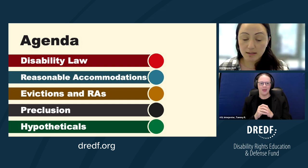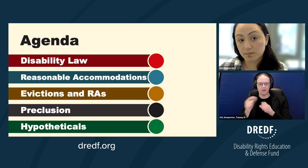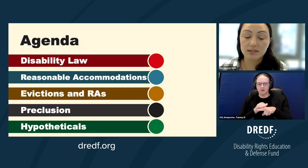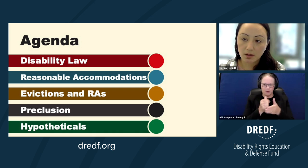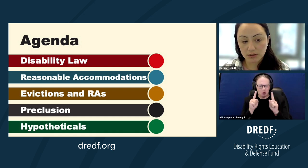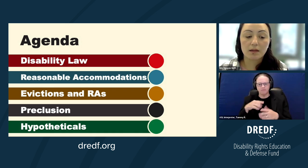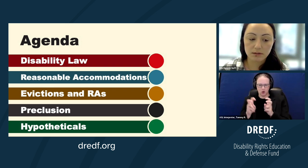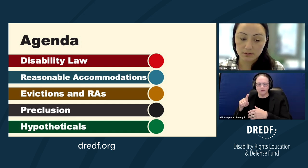There is a lot to talk about when it comes to representing people with disabilities in unlawful detainers — way too much to be consumed in an hour. This training is really focusing on reasonable accommodations and how that can be used to help a person going through an eviction process. We'll talk briefly about disability law, then go over how reasonable accommodations work, how to request them, and how they might work in the context of an eviction. We'll also talk about claim and issue preclusion for people who might want to bring an affirmative case for disability discrimination and how that might be impacted by an unlawful detainer case. And we have some hypotheticals at the end.